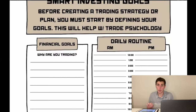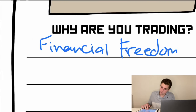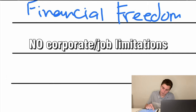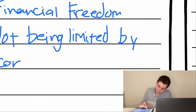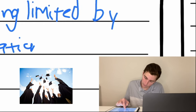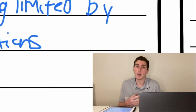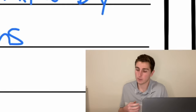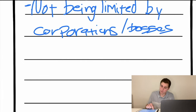Getting into the document, the first things we're looking at are financial goals. Some of the things I like about trading is the financial freedom it gives you — traders are allowed to trade and work from wherever they want all around the world. I also like not being limited by corporations or bosses, so right away financial freedom and job limitations are a big part of why I trade.